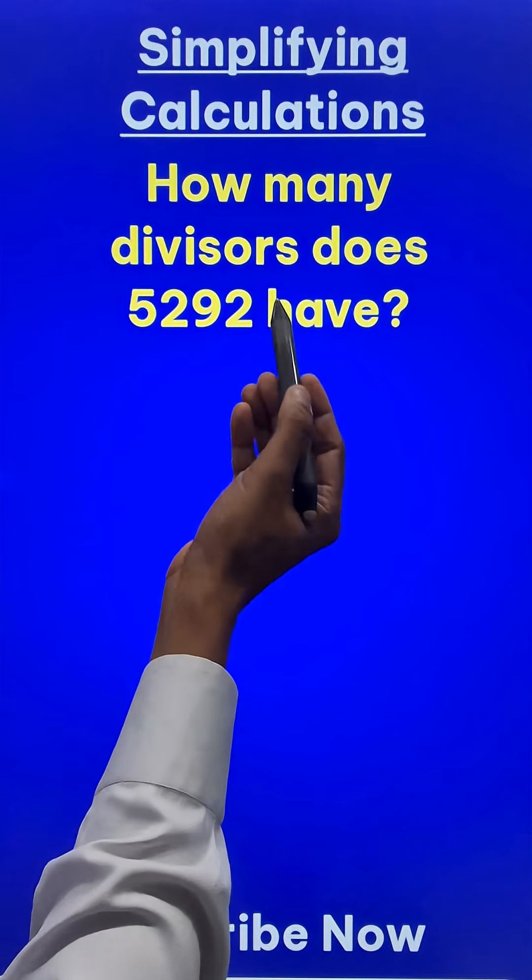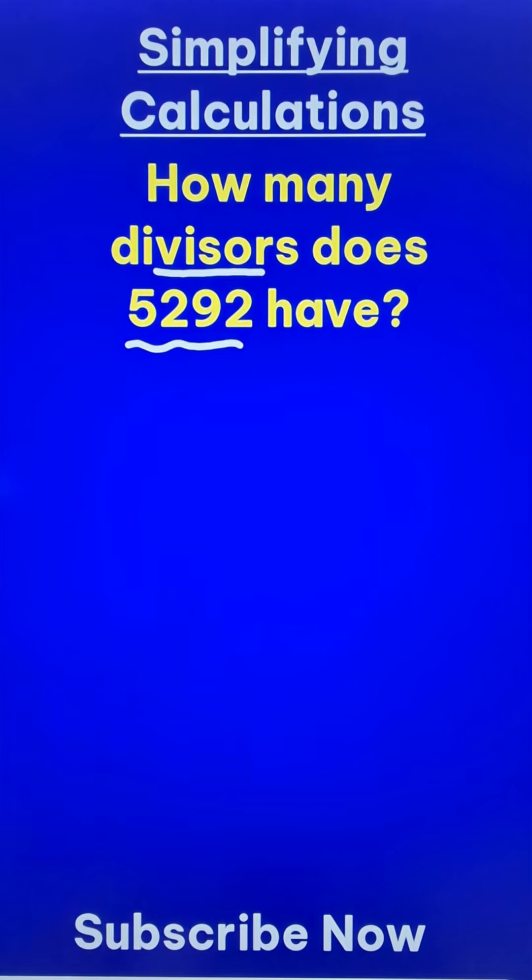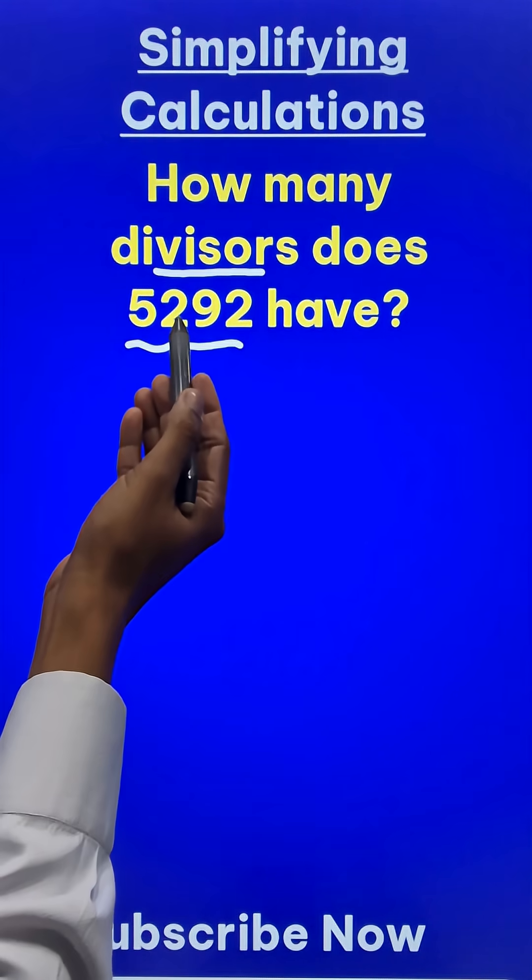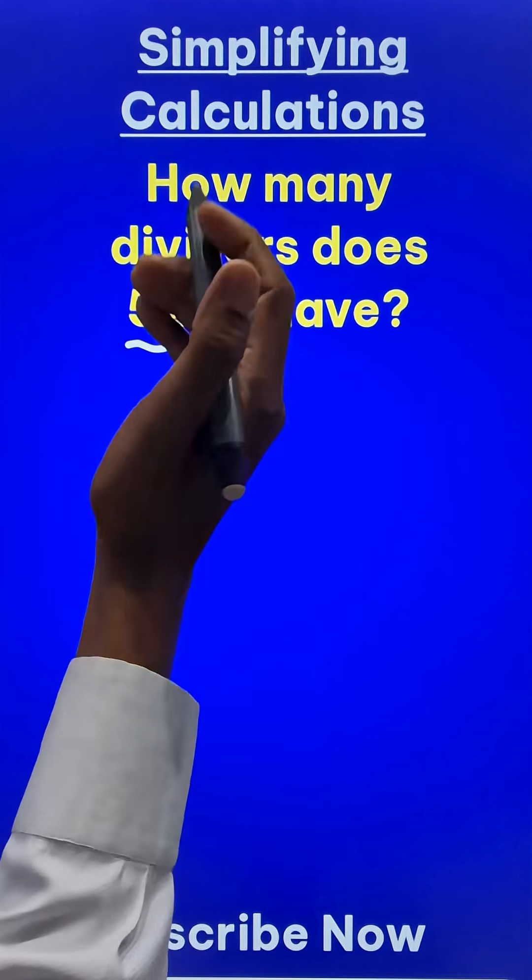Let us learn this amazing trick to find the exact number of divisors of a big number like 5292. We can't just keep on checking with all numbers up to 5292, right? There has to be a short trick.